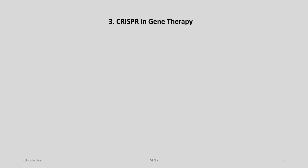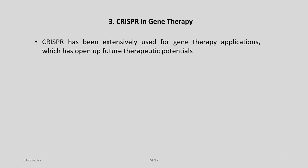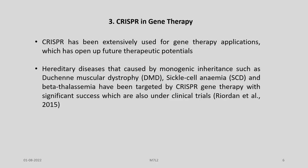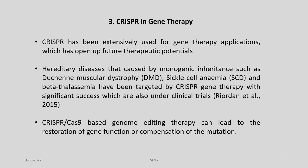CRISPR is also being increasingly used in gene therapy, and various experiments are in different stages of development including some in clinical trial stage, giving it huge therapeutic potential. We know that hereditary diseases caused by monogenic inheritances such as Duchenne muscular dystrophy (DMD), sickle cell anemia, and beta thalassemia have been targeted by CRISPR gene therapy with significant success and are currently under clinical trials. CRISPR-Cas9 based genome editing therapy can lead to restoration of gene function or compensation of the mutation causing the genetic disease.